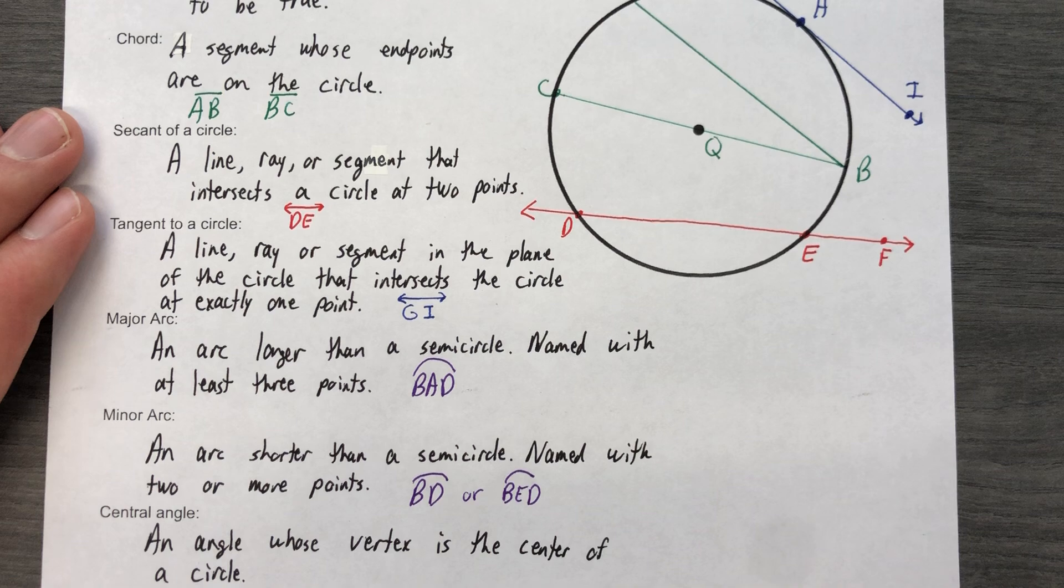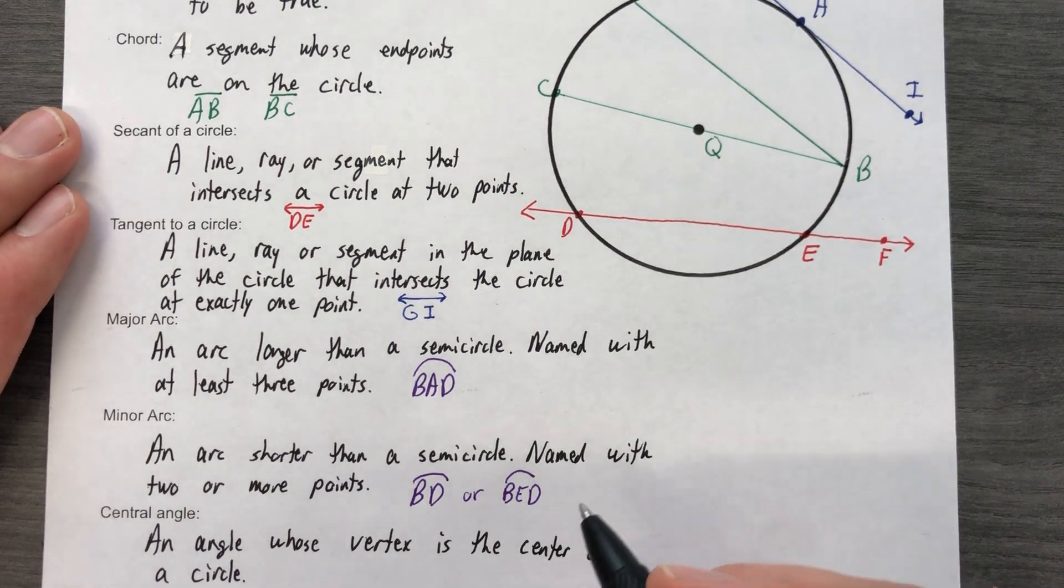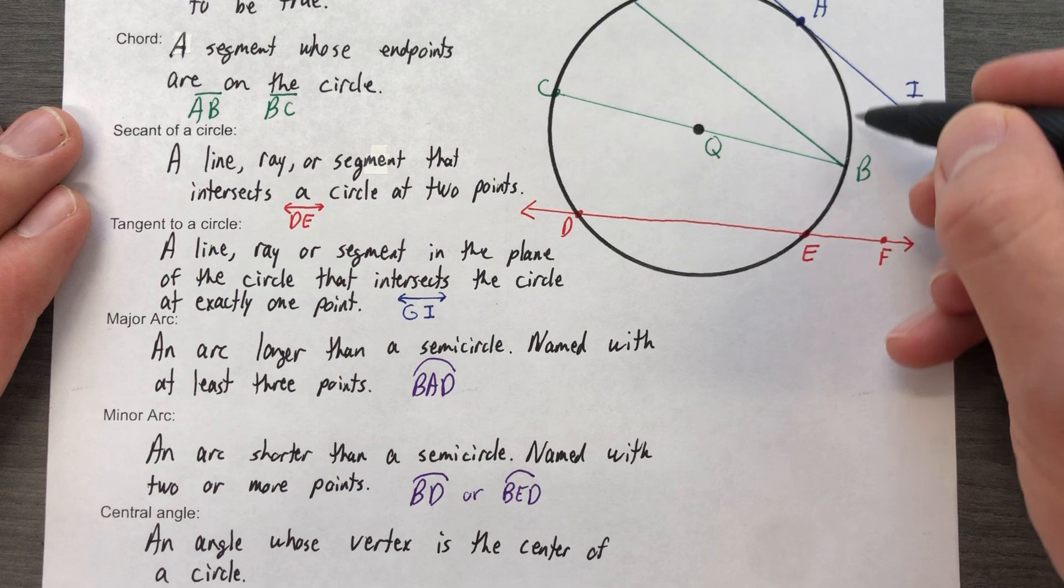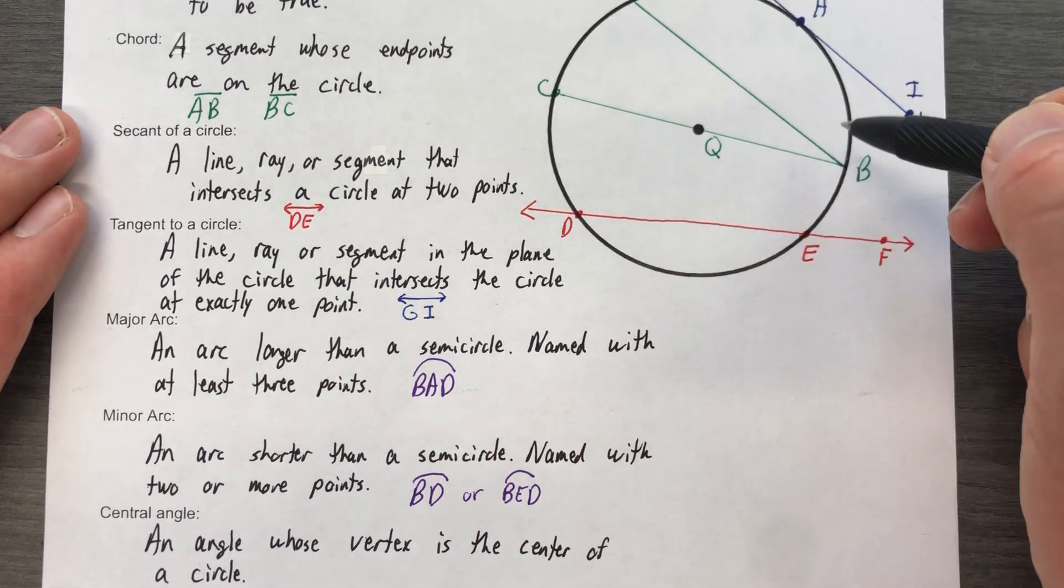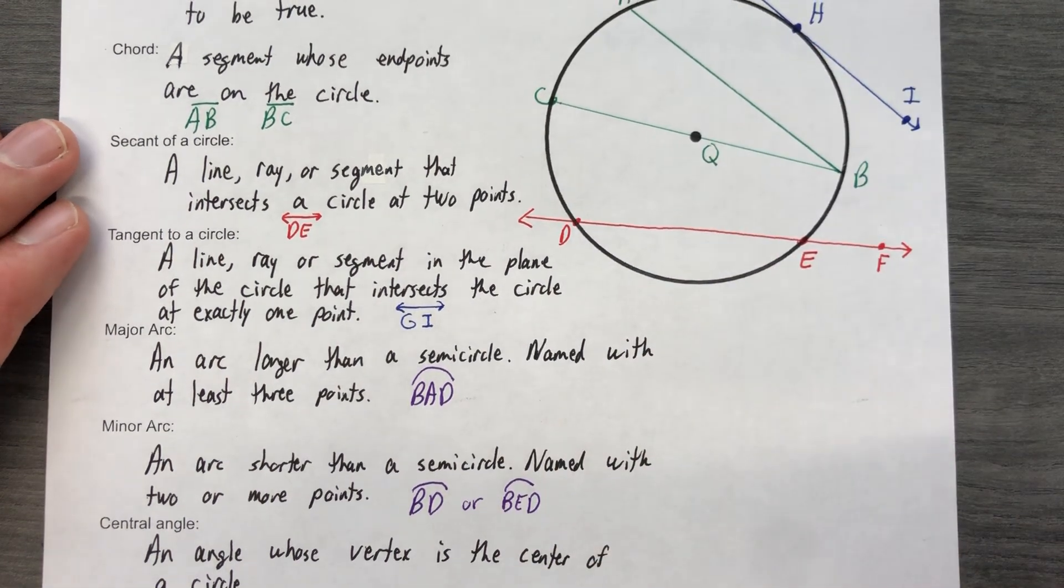And then of course a semicircle would be exactly half a circle—I don't have that definition in there. So what I have is a major arc that's going to cover more than half the circle, have to have three letters so I'll have some sense of direction. Minor arc just covers a piece of the circle.